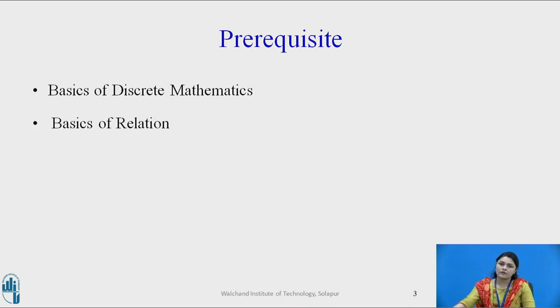Now what are the prerequisites for these? Basically you should be aware about discrete mathematics, basics of your relation, and the most important thing is what is a partial order relation. We are already aware partial order relation satisfies the basic three properties like reflexivity, transitivity, and anti-symmetric, which further says the relation is partial order relation.